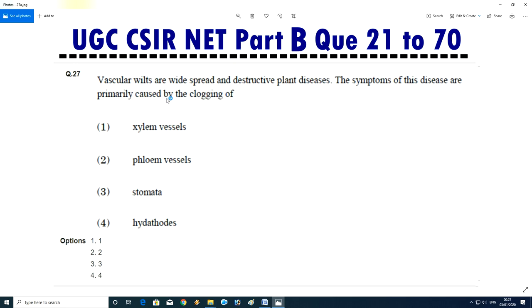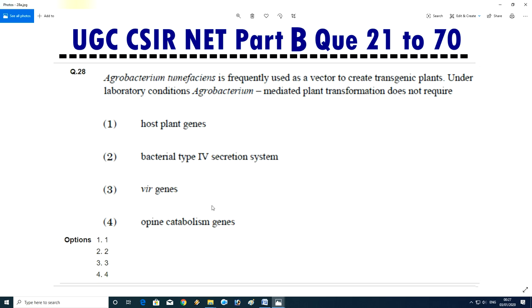Question No.28/29 - Vascular wilt are widespread and destructive plant disease. The symptoms of this disease are primarily caused by clogging. Xylem vessel, phloem vessel, stomata, or hydathode. Answer is A, xylem vessel.